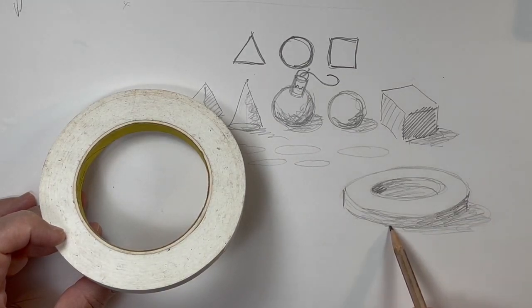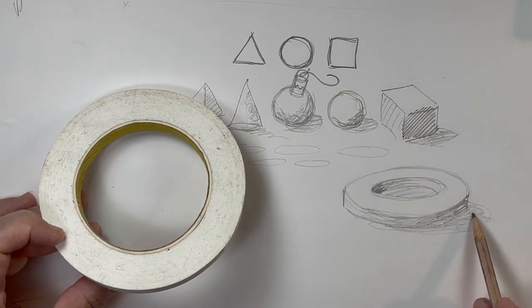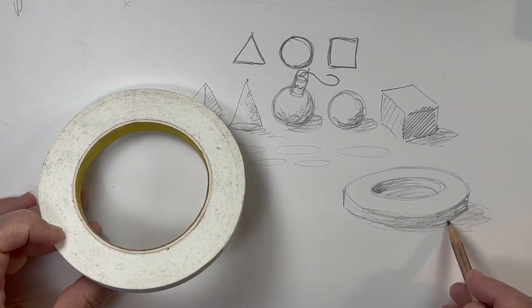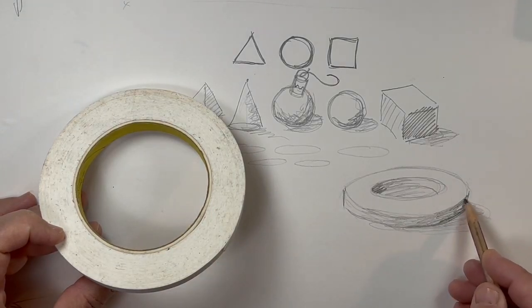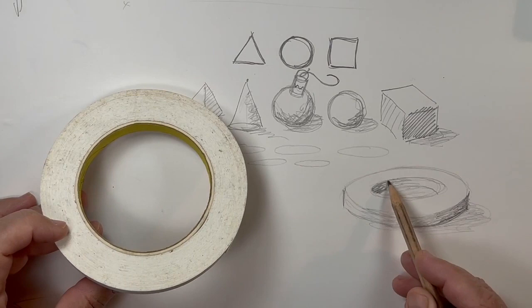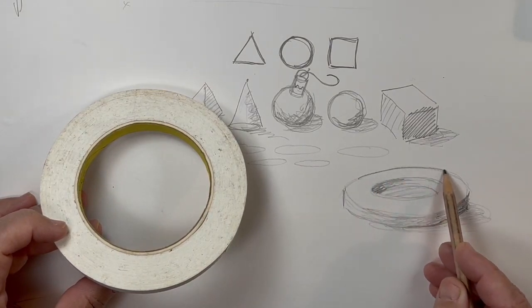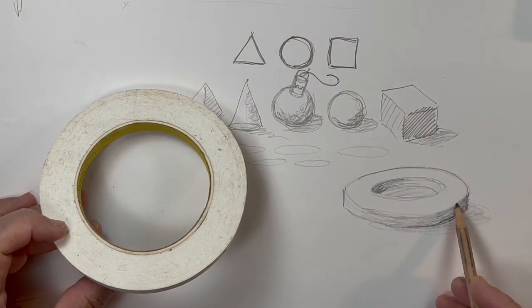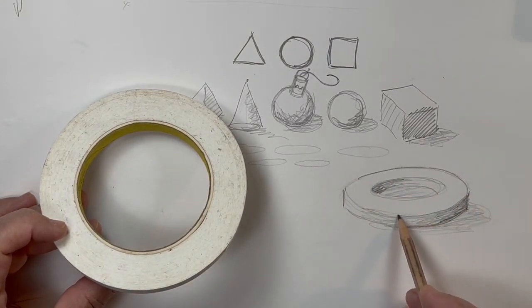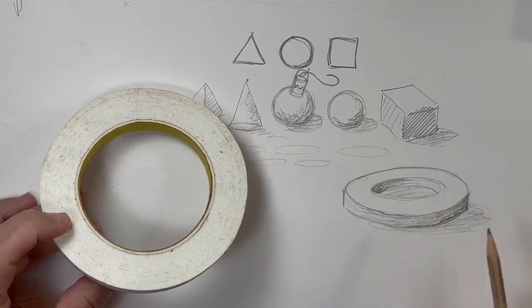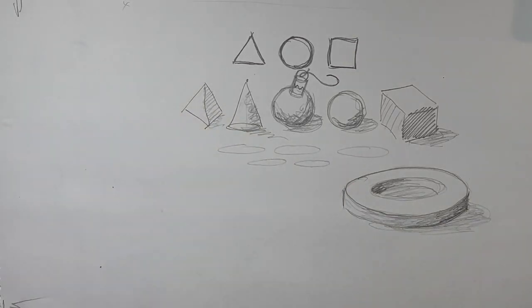With shadows it's always good to emphasize this dark edge a little bit more. So there you have it — using your ellipses to draw a roll of tape.